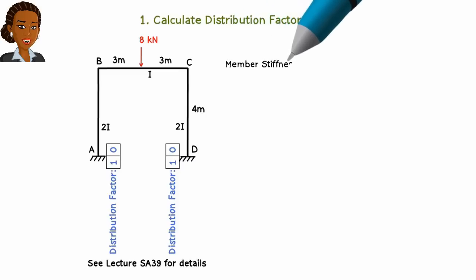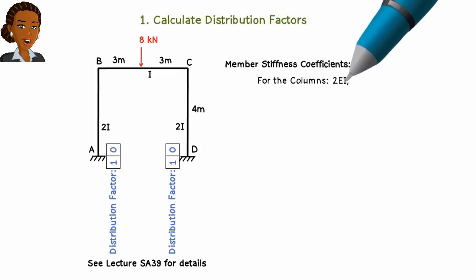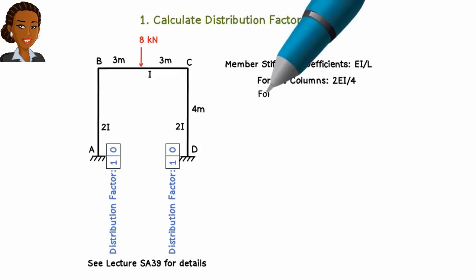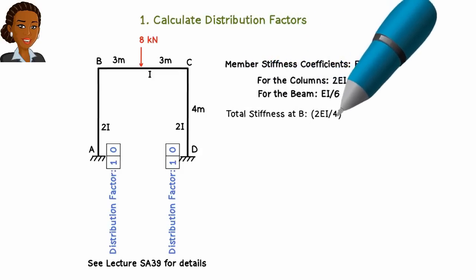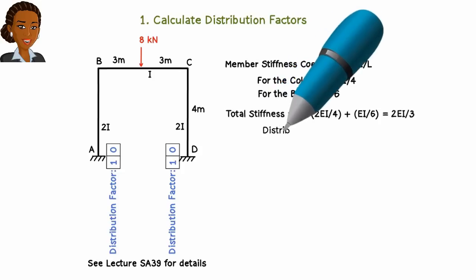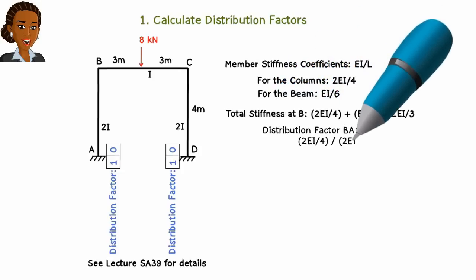For the interior joints, we calculate the distribution factors this way. Noting that the moment of inertia for the columns is twice the moment of inertia for the beam, we write the stiffness coefficients as 2EI over 4 for the columns and EI over 6 for the beam. This makes joint stiffness at B equal to 2EI over 3. Hence, the distribution factors at the joint are calculated accordingly.